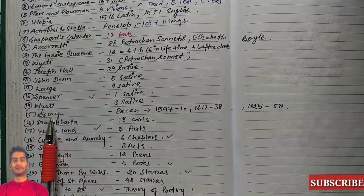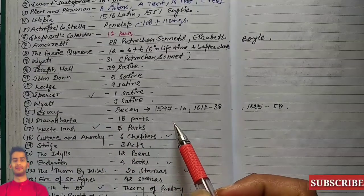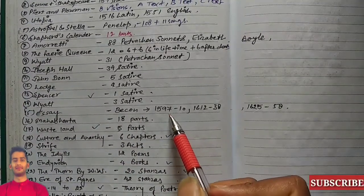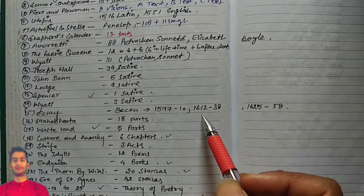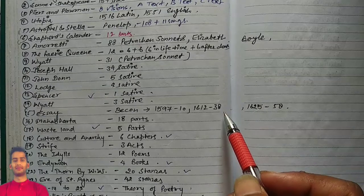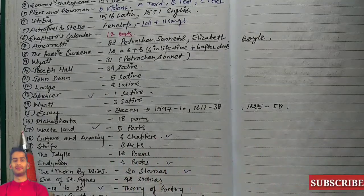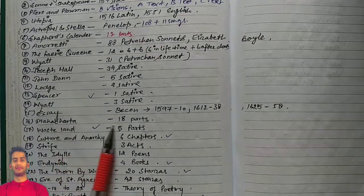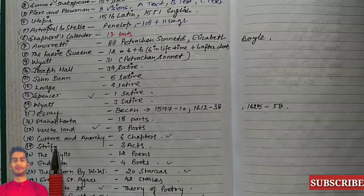Essays by Bacon: in 1597, 10 essays got published; in 1612, 38 sonnets got published; and 1625, 58 sonnets. Mahabharata: 18 parts. Wasteland has five parts.